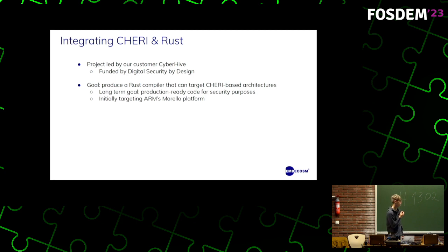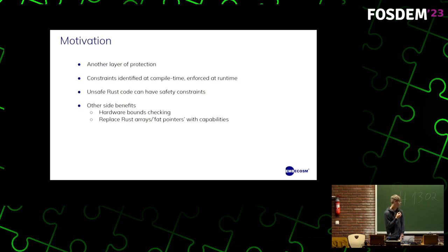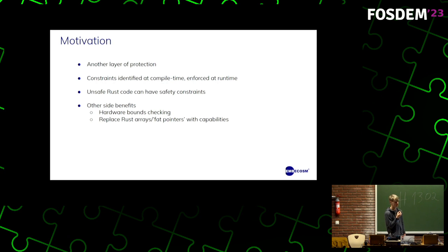We know we're initially going to be targeting ARM's Morello platform. Other than being able to compile existing Rust code for CHERI, the motivation behind integrating CHERI and Rust essentially boils down to another layer of protection. Rust is good at identifying and enforcing access constraints at compile time, but with CHERI you can identify constraints at compile time and enforce them in hardware at runtime. A good example is that Rust code annotated with unsafe is often a necessity in many real-world projects, which means it could behave badly at runtime. With CHERI, you can prevent this bad behavior in hardware when it occurs.